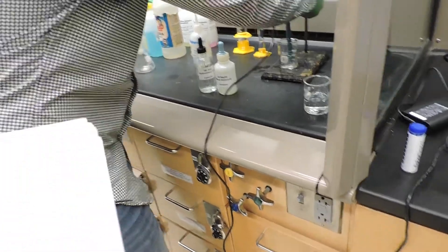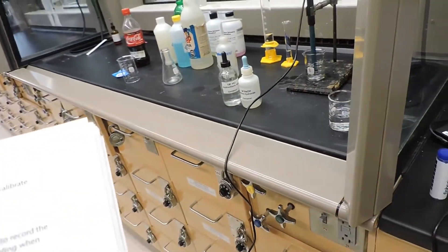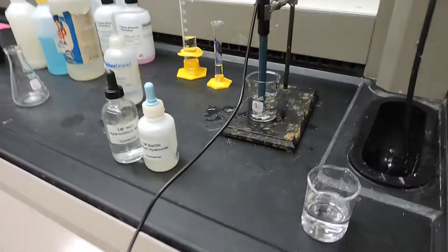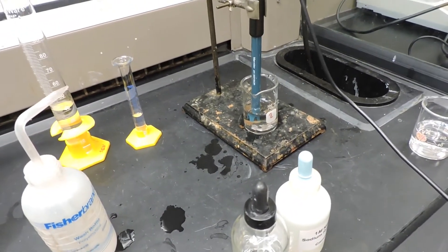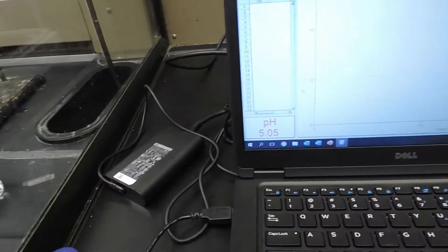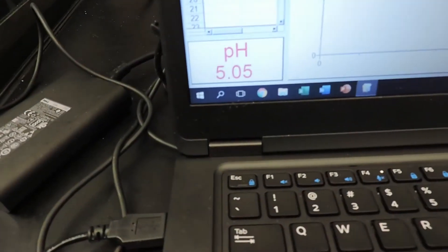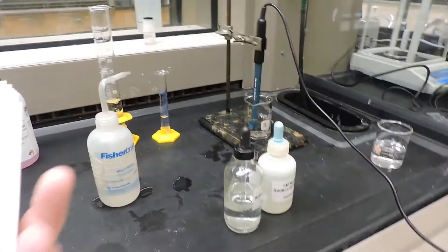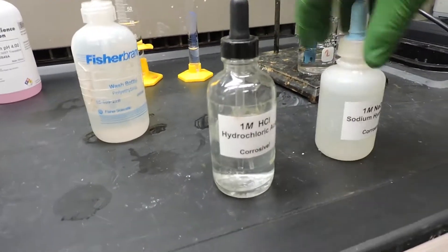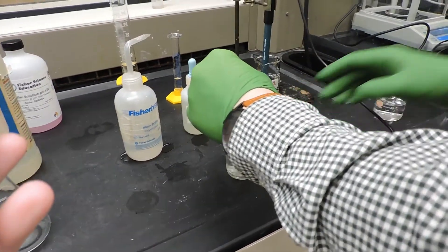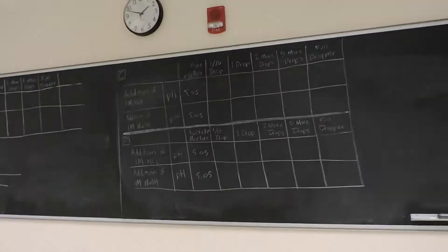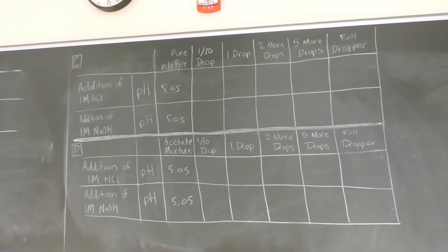Now we're on to part C of the experiment, which is the effect of acid or base on the pH of water. So we have 50 milliliters of water, DI water, in a beaker. We've immersed our electrode, and we'll record the initial reading of pH, which is 5.05. Next we're going to use dropper bottles of hydrochloric acid to expel a certain amount of the drops into the solution and record pH. According to our table, we need one tenth of a drop, one drop, two drops, five drops, and the full dropper. So we're going to go in that order.